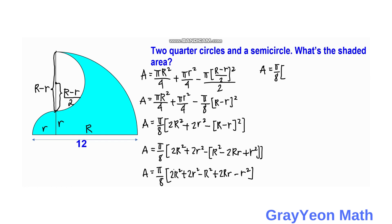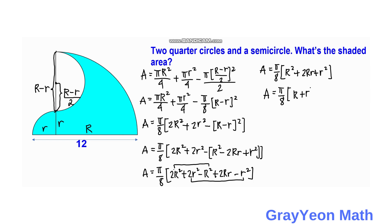Simplifying the terms inside the parentheses: combining 2R squared minus R squared gives R squared, combining 2r squared minus r squared gives r squared, and we retain the 2Rr term. We notice the expression inside is actually the square of the binomial (R plus r).